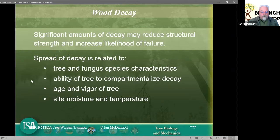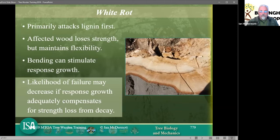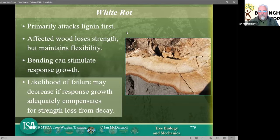Fundamentally there are three kinds of rot: white rot, brown rot, and soft rot. White rot primarily attacks the lignin in a tree first. As you know, it's the lignin that makes the tree stand up — the lignification process of tree cells and vessels makes them stiff and able to support the weight of the tree. Lignification is fundamentally the difference between herbaceous plants and woody stems. The affected wood loses strength but maintains flexibility in white rot, so the lignin gives strength while the cellulose gives the flexibility.